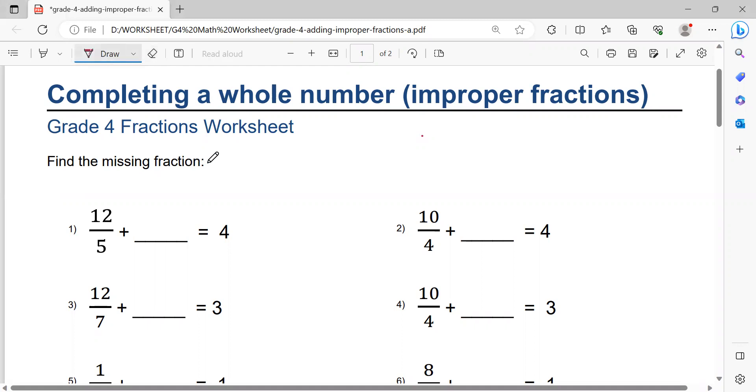Find the missing fraction. 12 over 5 plus blank equals 4. First, you have to multiply 5 times 4. 5 times 4 equals 20.